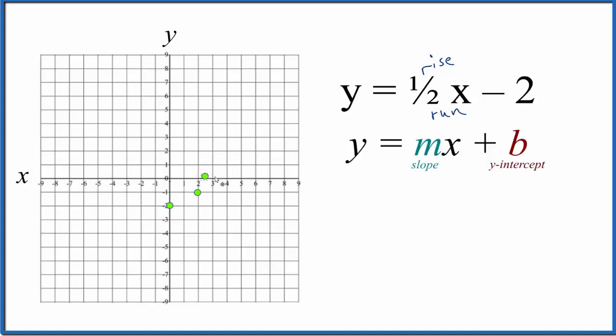So we go to our y-intercept, we go up 1 and then over 1, 2. Up 1, over 1, 2. Let's go in the opposite direction. Let's go down 1 and over 2 to the left. Let's do one more. We'll go down 1 and over 1, 2. And this is the graph for y equals 1/2x minus 2.